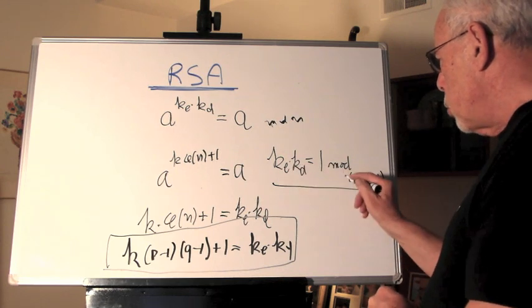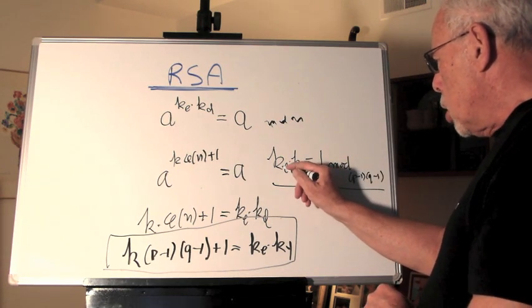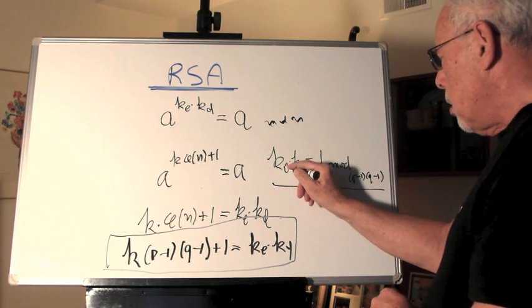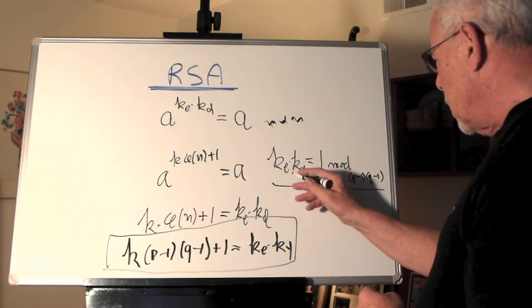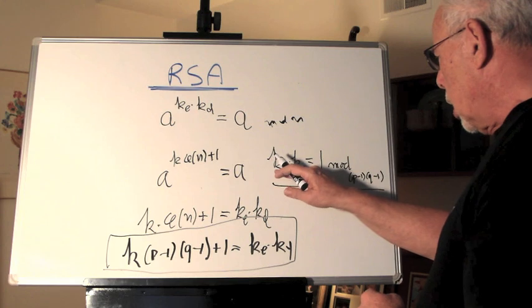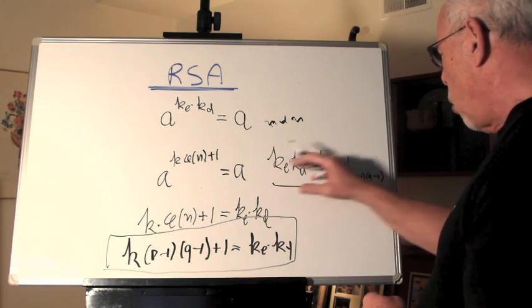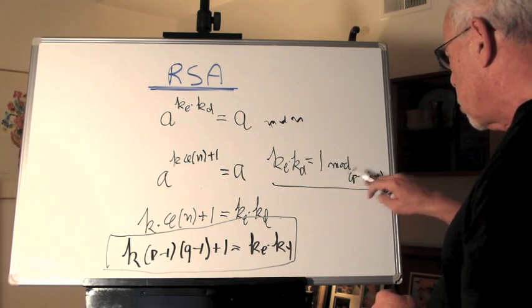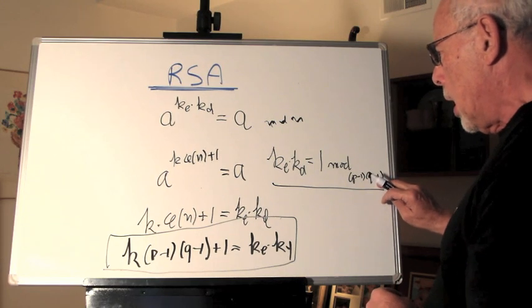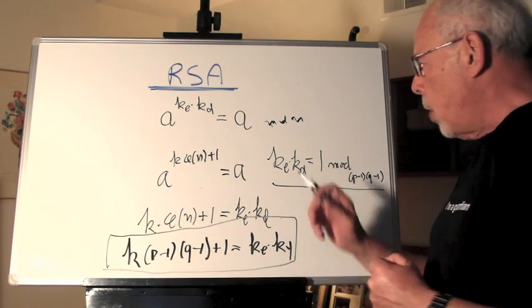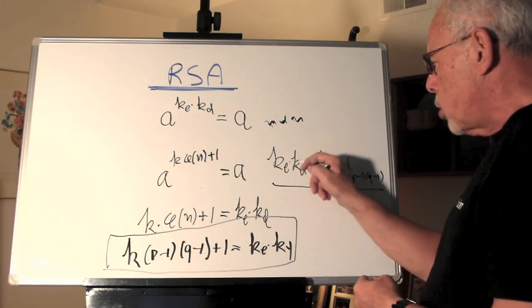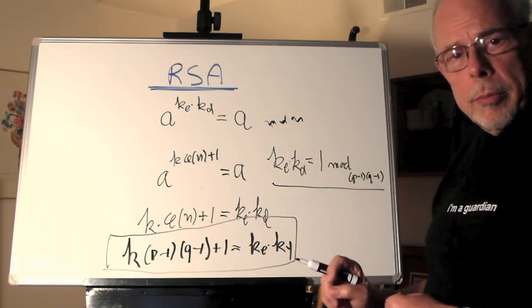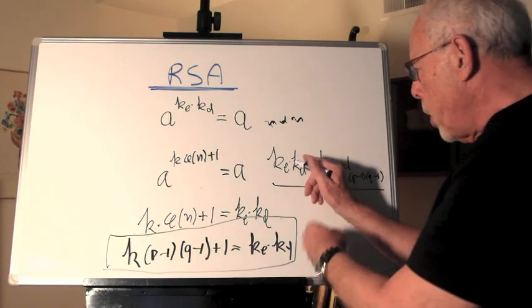So, now all that we have to do is to find a KE, any number, that is such that is co-prime with P minus 1 times Q minus 1. And then we are guaranteed to have another number, KD, such that multiplication will give 1.